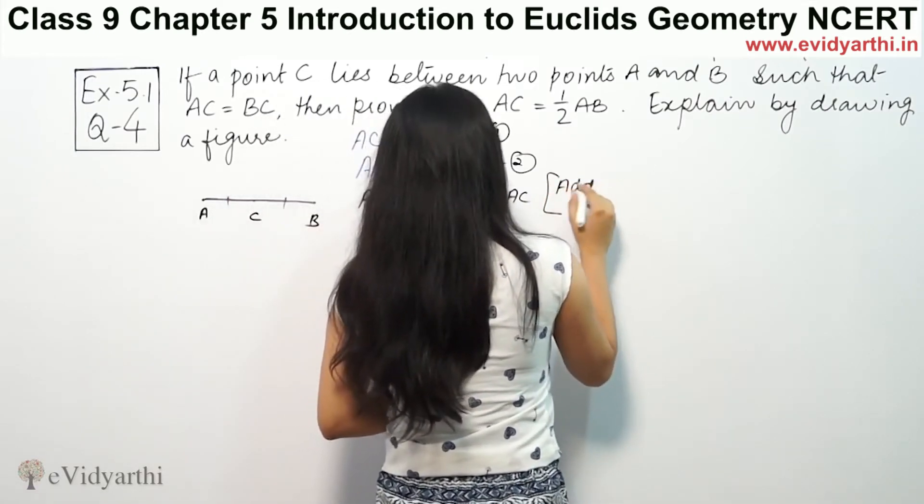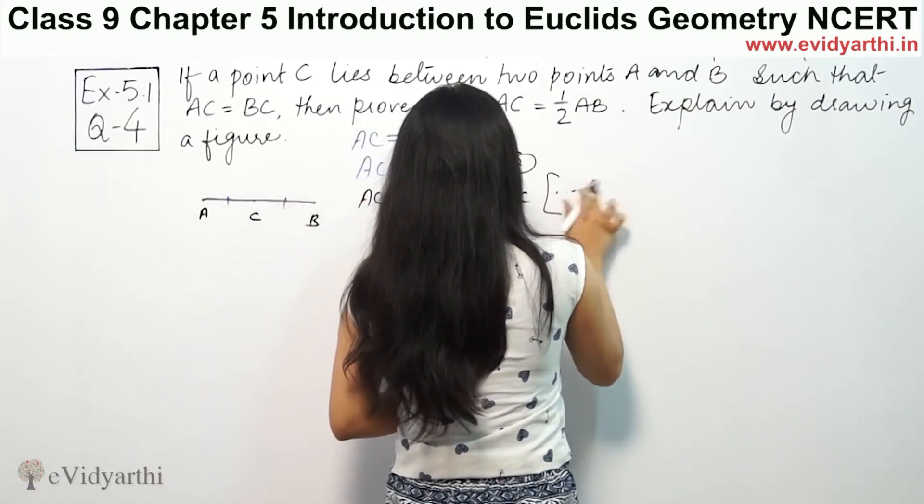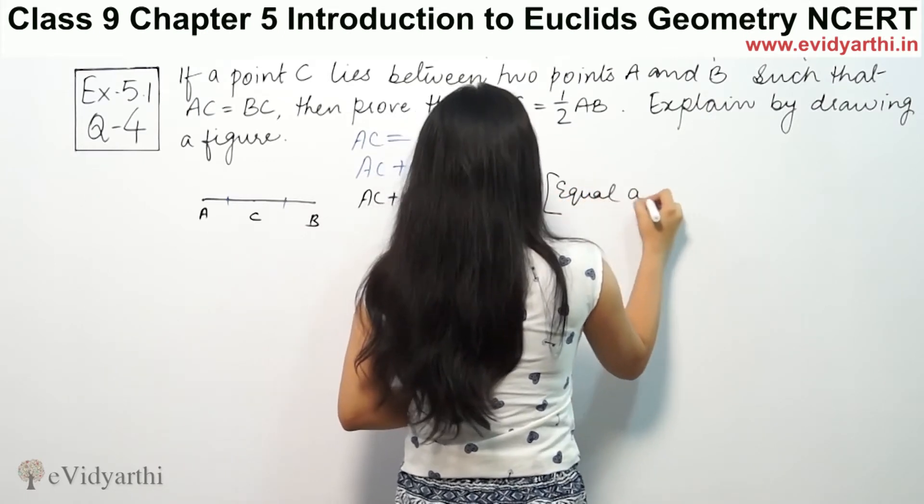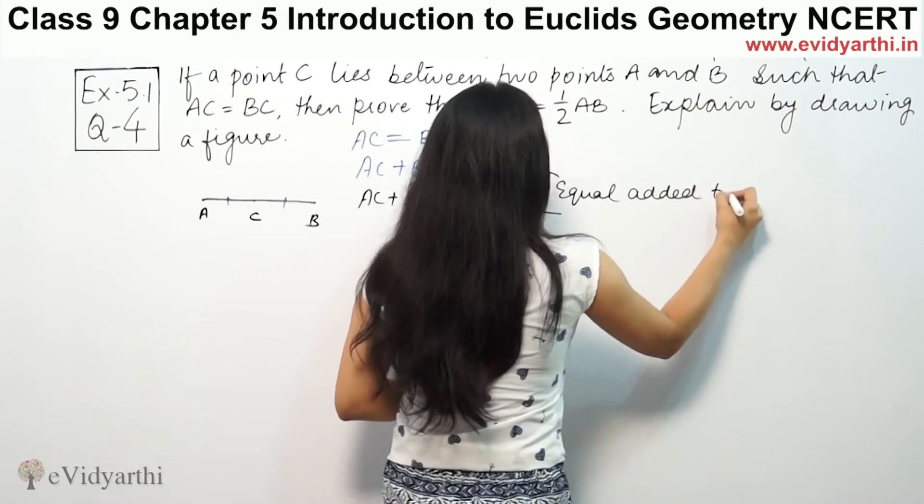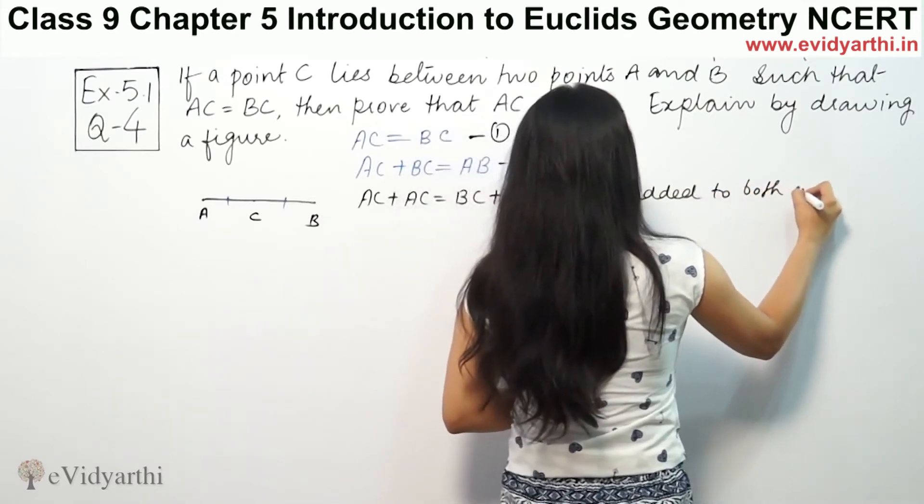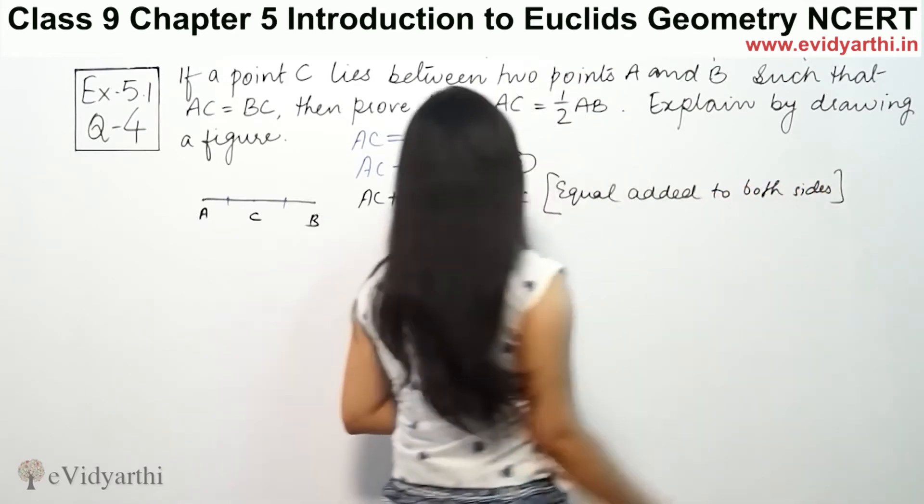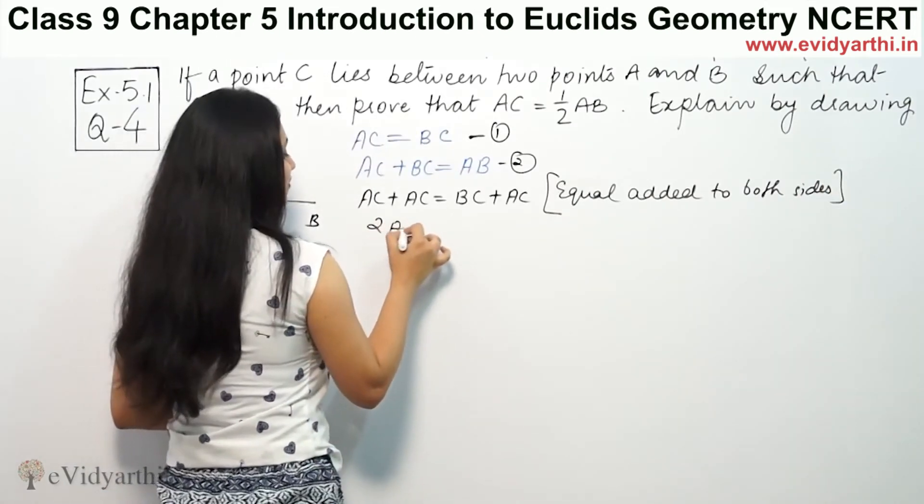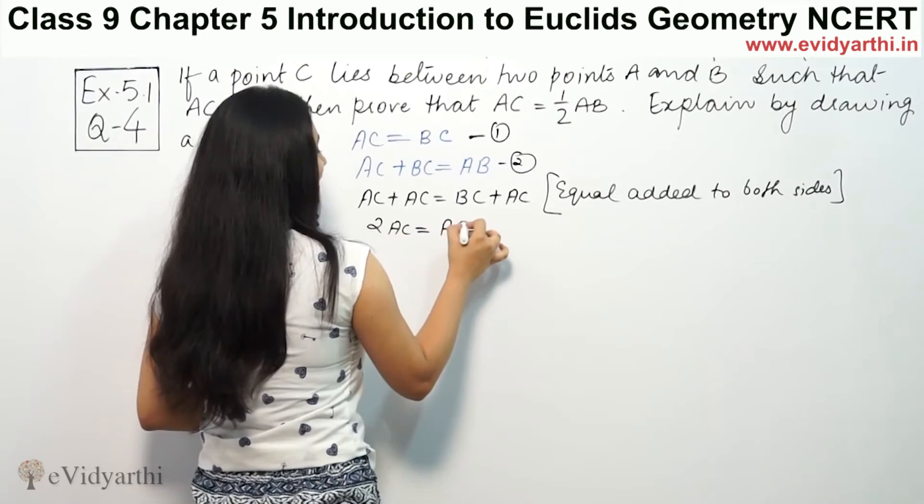Adding equals to both sides, this will be twice of AC equal to AB.